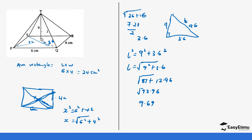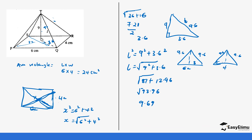Now this is 9.6 for our slant height. Remember, the triangles are different for a rectangular base. We have one set of triangles with a base of 6 cm and slant height 9.6, and another set with a base of 4 cm and slant height 9.6. When we drop the perpendicular bisector in each case, the first gives a base half of 3 cm, and the second gives a base half of 2 cm.